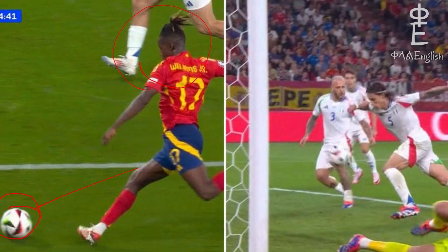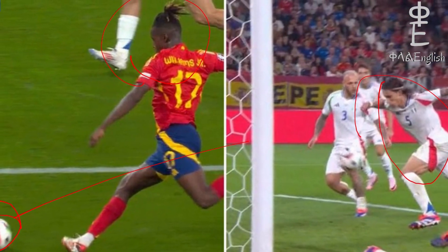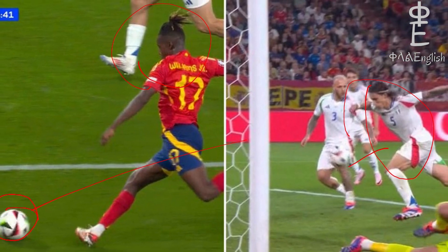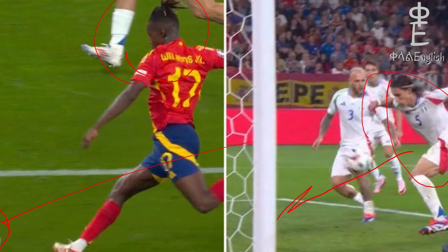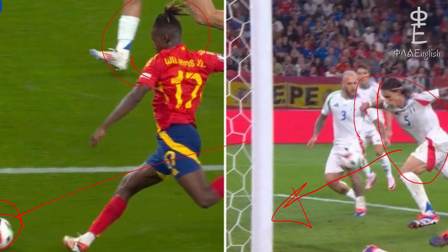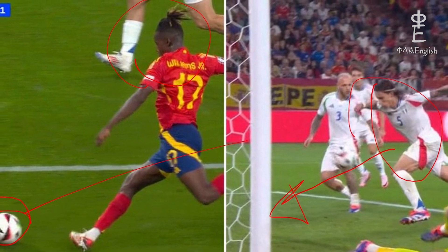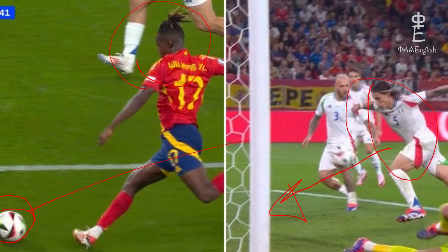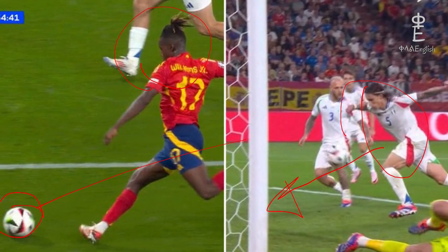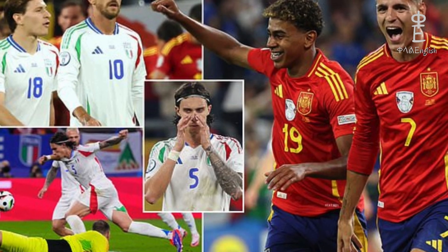Then in the 55th minute, the crucial moment arrived. Nico Williams sent in a low cross and Ricardo Calafiori accidentally turned the ball into his own net, which gave Spain the lead. Although Italy fought hard, they could not break through Spain's defense.